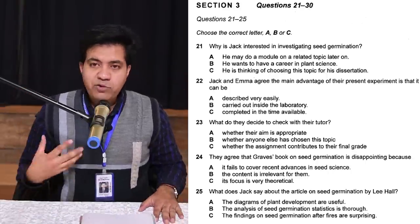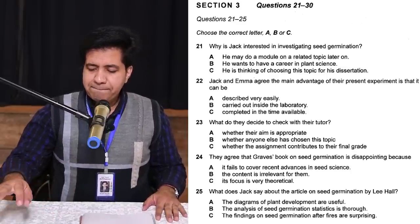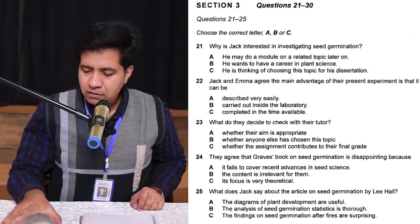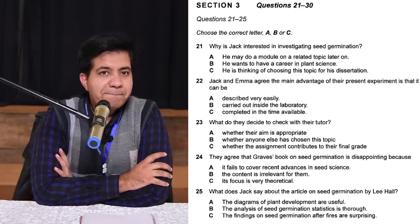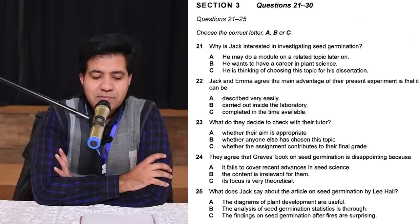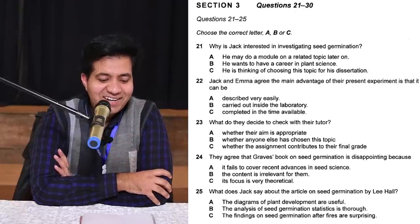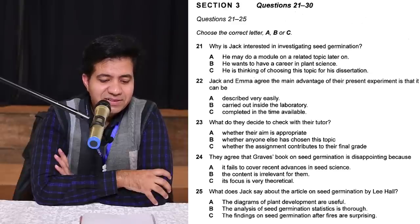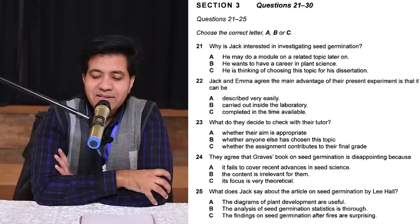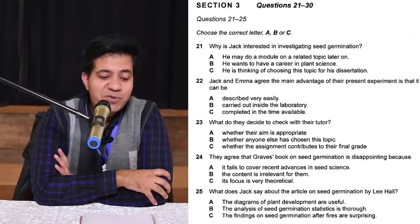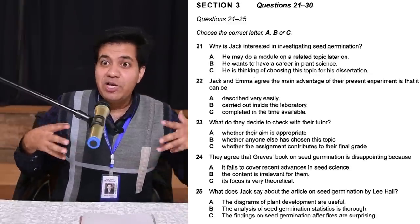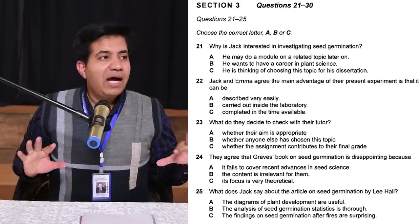Audio: 'We've got to choose a topic for our experiment, haven't we, Jack? Were you thinking of something to do with seeds?' — 'That's right. I thought we could look at seed germination — how a seed begins to grow.' — 'Any particular reason? I know you're hoping to work in plant science eventually.' — 'Yeah, but practically everything we do is going to feed into that. No, there's an optional module on seed structure and function in the third year that I might do, so I thought it might be useful for that. If I choose that option, I don't have to do a dissertation module.' So he said 'no' to the career reason — A is the right answer.